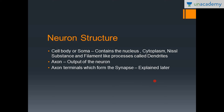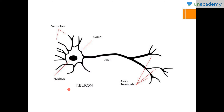The synapse is a point of contact between two neurons, which will be explained shortly. Two important MCQs to note: first, the Nissl substance consists of the rough endoplasmic reticulum. Second, the axon terminals are the part of the neuron that forms the synapse.